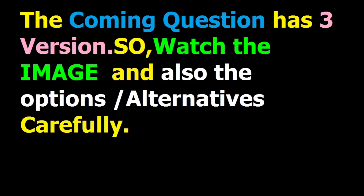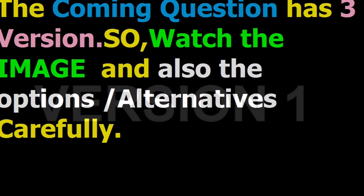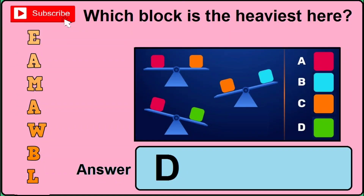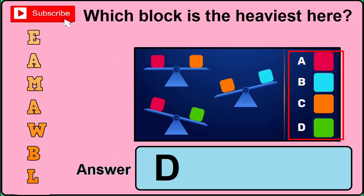This coming question also has got three different versions, so you need to watch the image and the options or alternatives very carefully. For example, in version 1 of this question, watch the image — it asks which block is the heaviest. See especially the right-hand side of the image, and if you find this set of same-to-same image, the correct answer will be D.